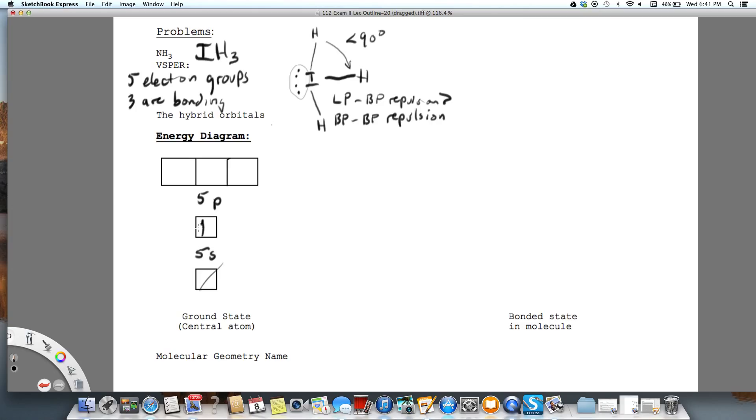As you know, iodine has seven valence electrons, two on the S and five on the P, there we are. So there's only one unpaired electron available for bonding, but we need three.